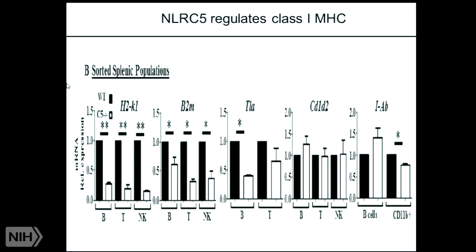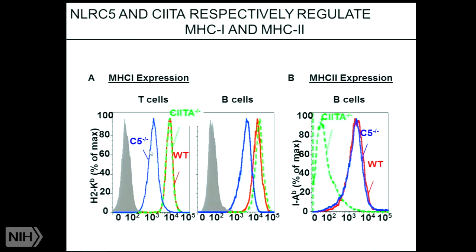NLRC5 knockout shows reduced H2K, Beta-2M, and TLA expression. However, it has no function on Class II MHC gene regulation, nor does it have any effect on CD1, which is not encoded by the MHC domain. So this shows that NLRC5 may be a master regulator of these Class I genes.